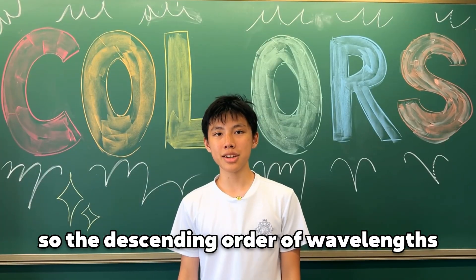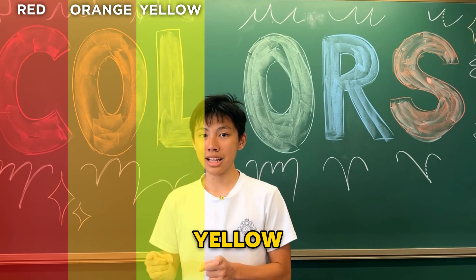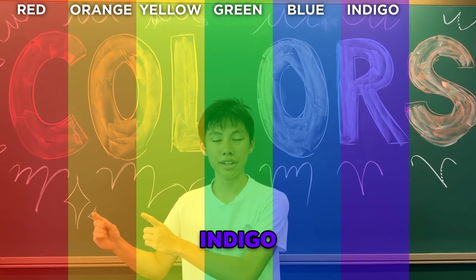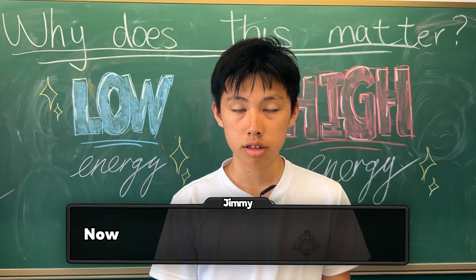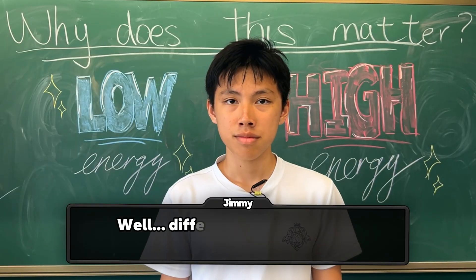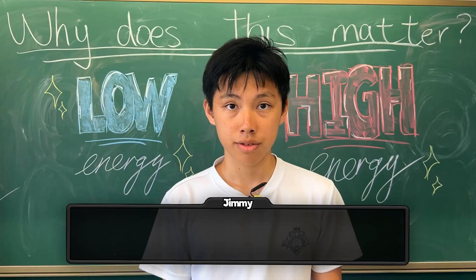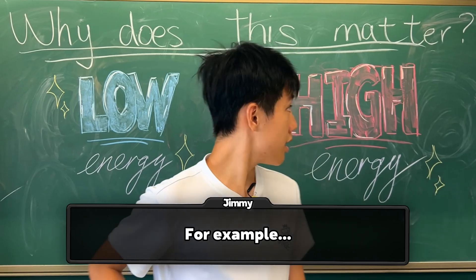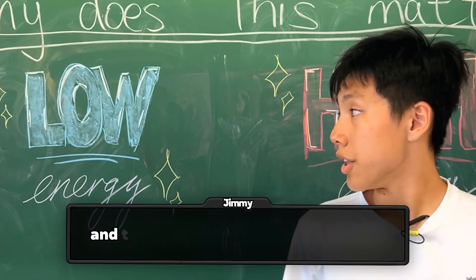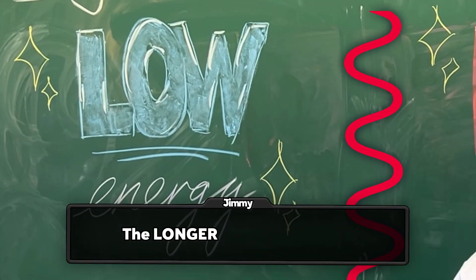So the descending order of wavelength should be red, orange, yellow, green, blue, indigo, and finally purple. Now, why does this matter? Well, different elements emit different amounts of energy. The higher the energy, the shorter the wavelength, and the lower the amount of energy, the longer the wavelength.